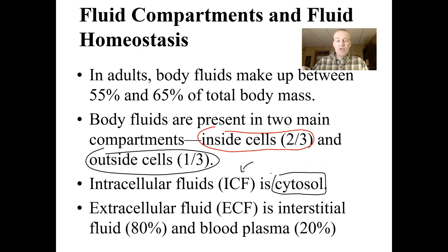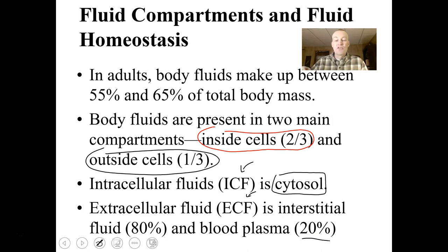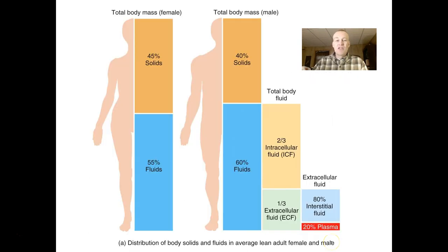Extracellular fluid is known as ECF, and it comprises interstitial fluid — the fluid that bathes all the tissues of the body — which makes up about 80% of the extracellular fluid. The plasma of your blood, the liquid part, makes up 20% of the extracellular fluid.